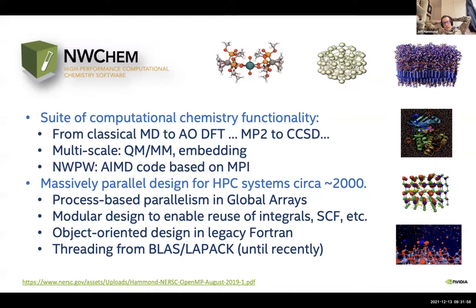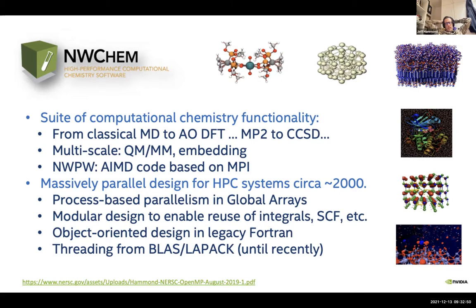Some of you know a lot about NWChem; I'm sure there are some who don't know much at all. For very high-level background: NWChem is a big package. It's got over a million lines of human-written code and over 4 million lines of total code — 3 million lines from the TCE code generator. So DFT, MP2, coupled cluster, multi-scale stuff, QM/MM embedding, plane wave stuff — similar capability to VASP but a slightly different application domain. It's massively parallel in the definition of the day in which it was created: multi-processing, multi-nodes with networks. It's written based on global arrays, which is now based on MPI.